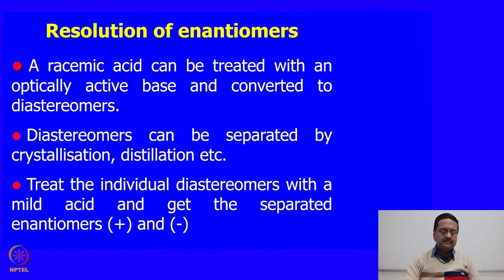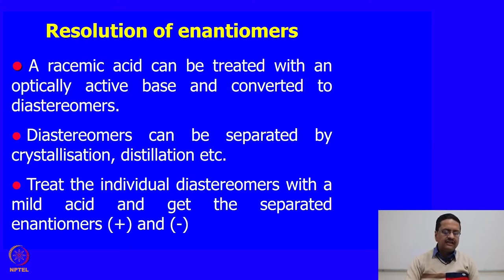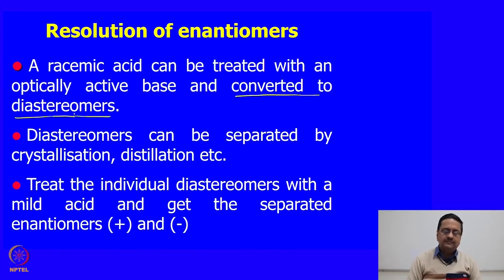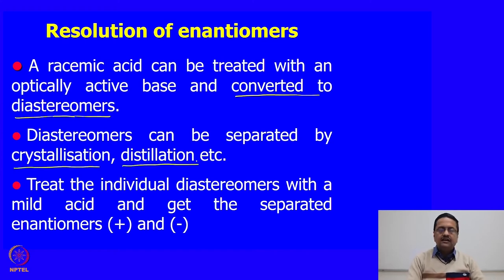When we have a set of different enantiomers in solution, we call it a racemic mixture, and sometimes we may need to isolate the two enantiomers from a given racemic mixture. A racemic acid can be treated with an optically active base to convert it into diastereomers. Diastereomers can then be separated by crystallization and distillation methods, and sometimes by their solubility as well. Then we treat the individual diastereomers with a mild acid and get the separated enantiomers out as plus and minus forms.